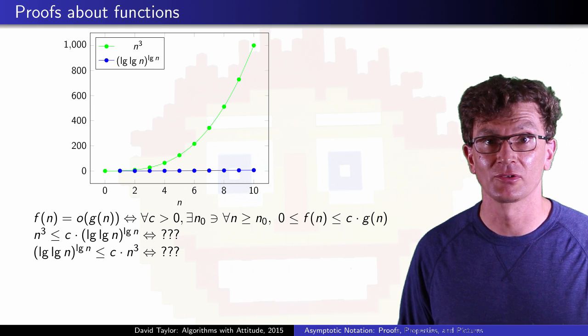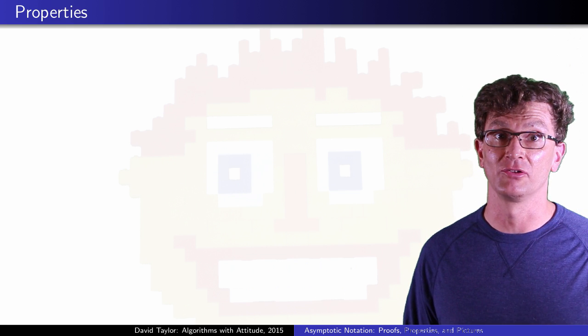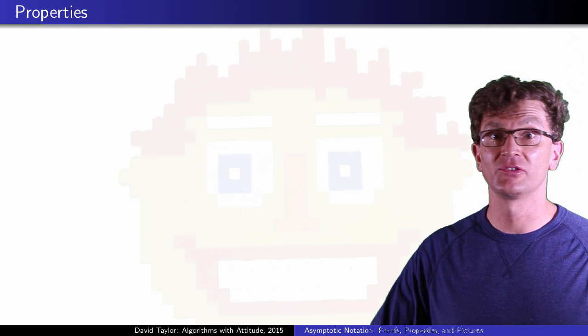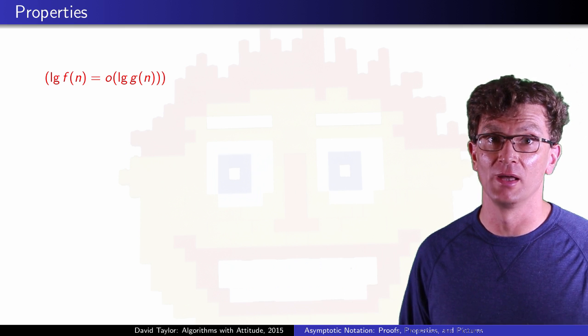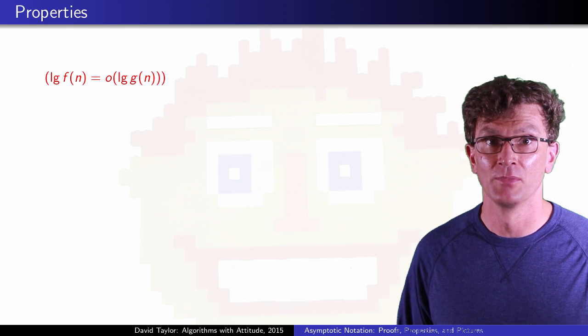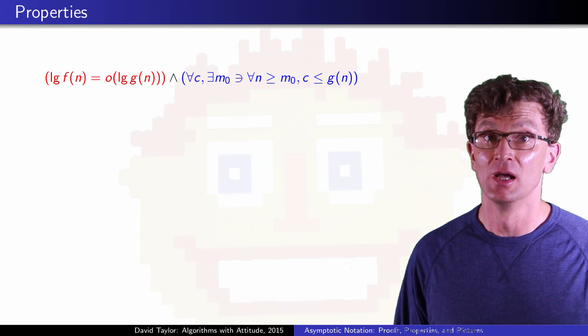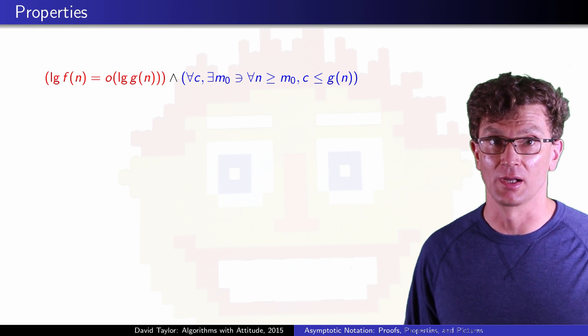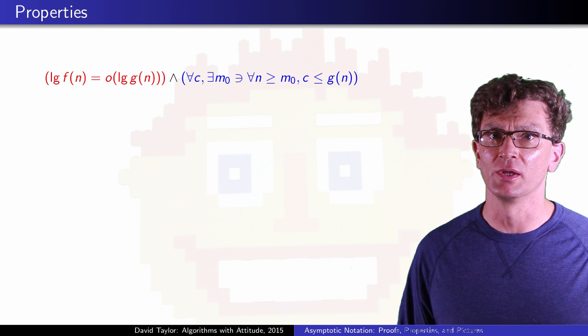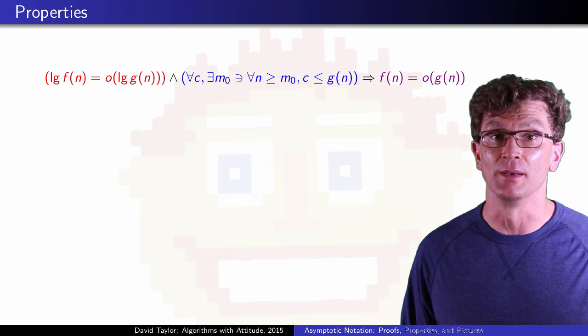Students are also asked to prove properties about asymptotic growth. Let's say you are given that f(n) log of f(n) is little o of log of g(n), and also that for any constant for sufficiently large n, g(n) grows larger than the constant. We want to show that these imply that f(n) is little o of g(n).